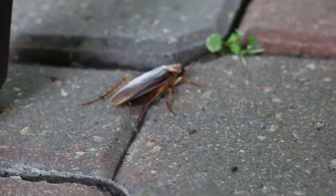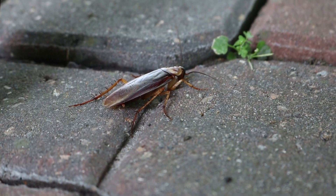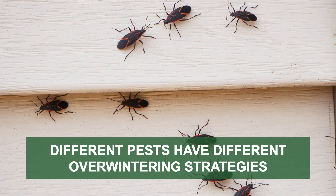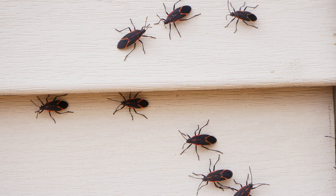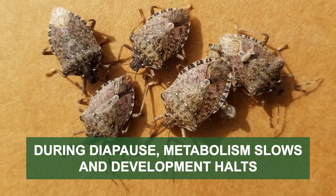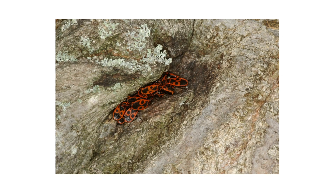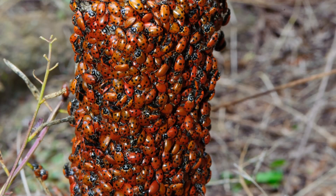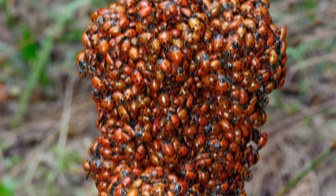As winter approaches, different pests will employ different survival strategies to endure the cold. Collectively, these strategies are known as overwintering and help pests to find shelter and conserve energy. When it gets cold, many insects enter a state of hibernation known as diapause. During diapause, these insects slow down their metabolism, putting a stop to their development until the weather warms back up. Pests that undergo diapause tend to seek shelter in hard-to-reach places closer to heat sources such as around plumbing or water heaters.